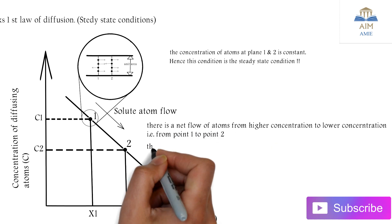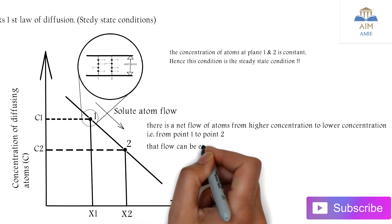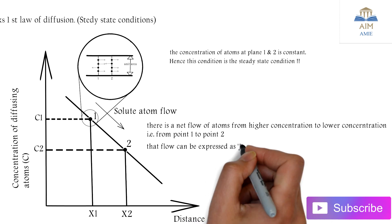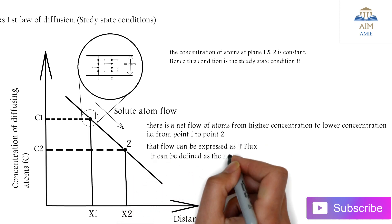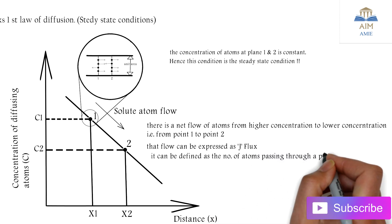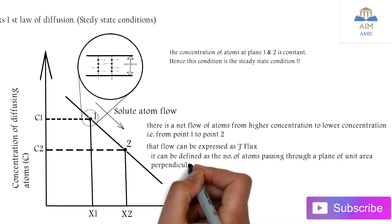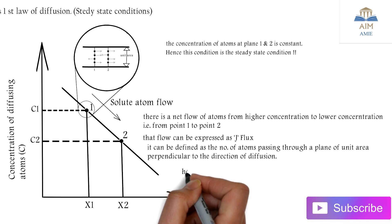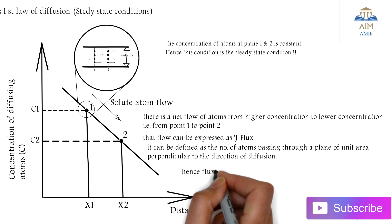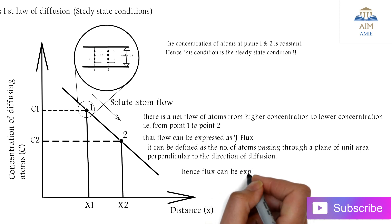The flow can be expressed as J, that is nothing but the flux. It can be defined as the number of atoms passing through a plane of unit area perpendicular to the direction of diffusion. Hence the flux can be expressed as...